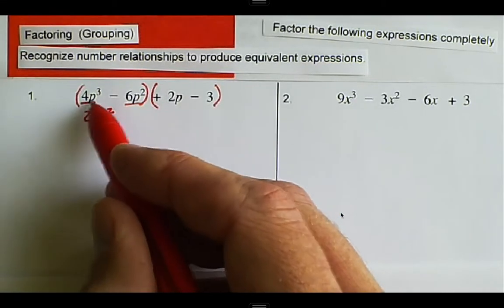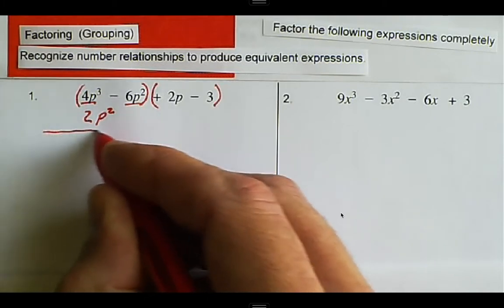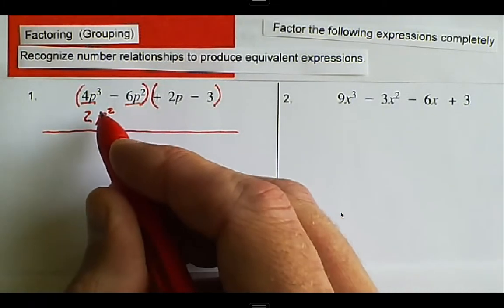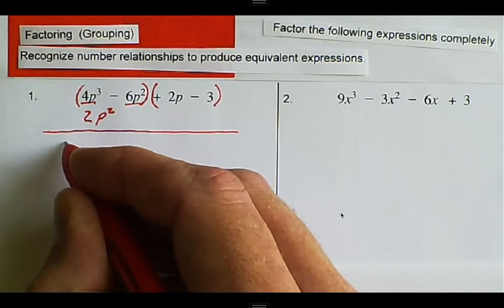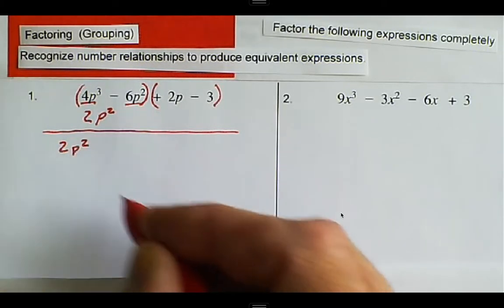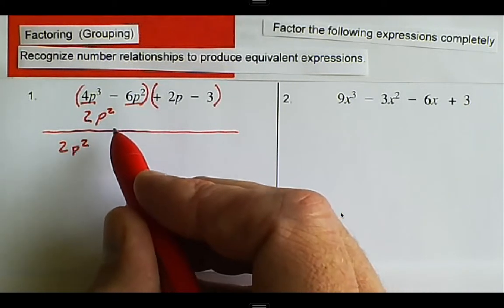So we're going to divide 2P squared out of each of these first two terms. So 4P cubed, we can rewrite it here. We'll put our line down, and we can rewrite it. The 2P squared is coming out. That's coming out of this first one.